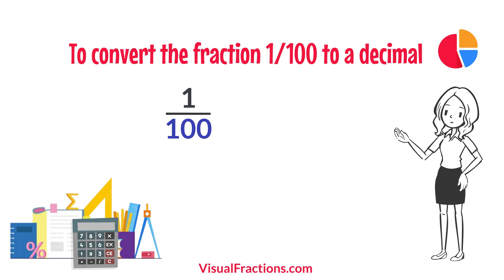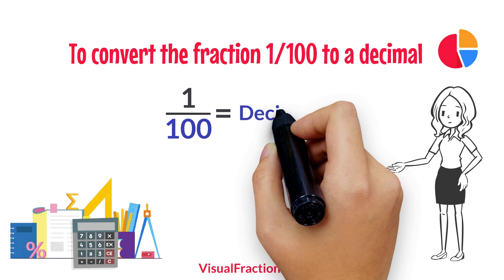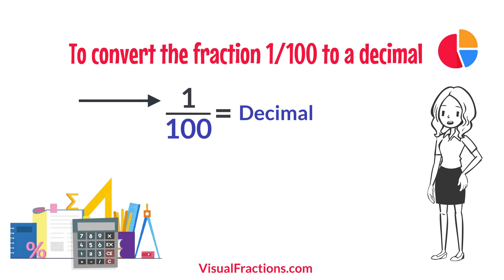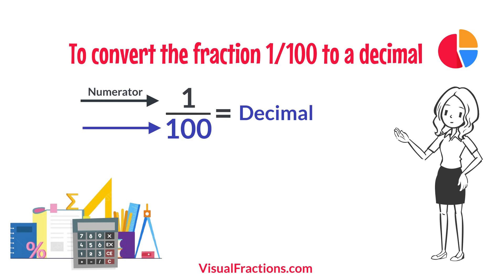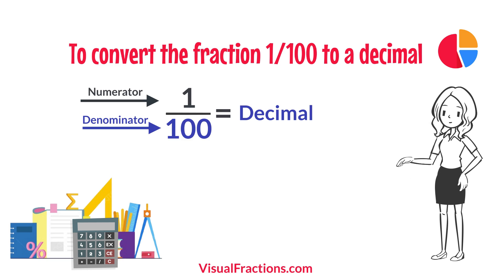To convert the fraction 1/100th to a decimal, all we need to do is divide the numerator, the top number, by the denominator, the bottom number. So, we simply divide 1 by 100.